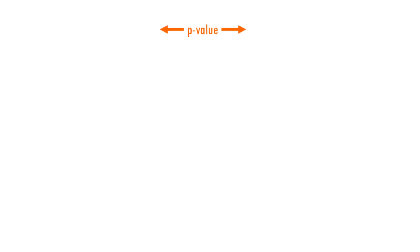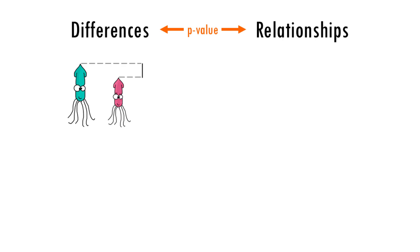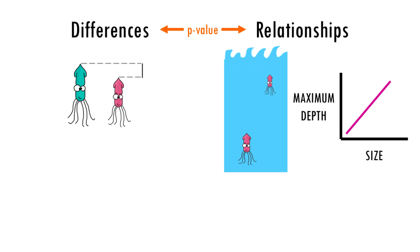P-values can be used to assess differences or relationships between variables in a sample. Differences, for example, the difference in size between males and females in a squid population, and relationships, for example, the relationship between size and the maximum depth squids dive to. In either case, the p-value tells us the probability that the observed result occurred by pure chance.